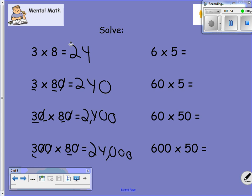Same concepts over here. Six times five. We get 30. 60 times five. Well, I get 30. Then I add a zero. 300. 60 times 50. I get a 30. Add two zeros.